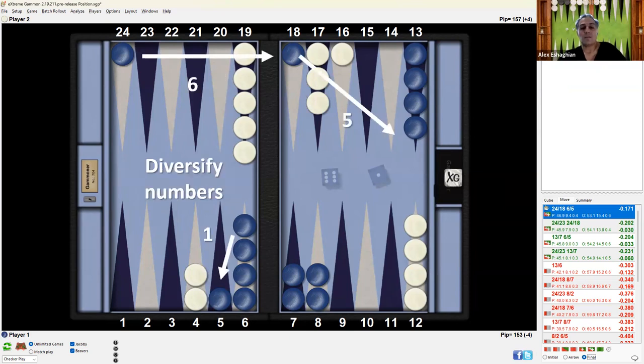And then you want to diversify your own numbers. So you want to make your numbers for your next roll better. So after this, 6s play nicely to make that advanced anchor, 5s can safety the checker, and 1s can cover the blot, whereas they cannot do it otherwise.